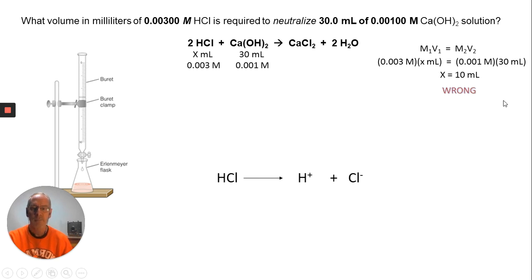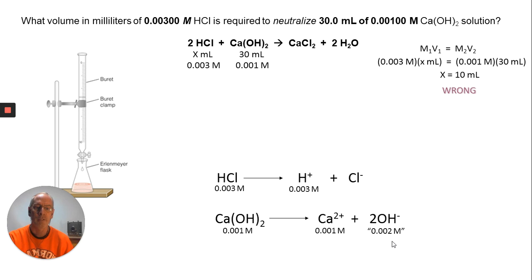Let's talk about why that's not what we need to do to solve the problem. Think about the dissociation of hydrochloric acid. When HCl dissociates, it forms H+ and Cl-. If the HCl is 0.003 molar, then the H+ is 0.003 molar. When we look at calcium hydroxide, if it's 0.001 molar, the calcium is 0.001 molar. But what is the hydroxide concentration? I hope you didn't say 0.001 molar. You note there's a coefficient 2, so it's actually double - it has the equivalent of 0.002 molar.